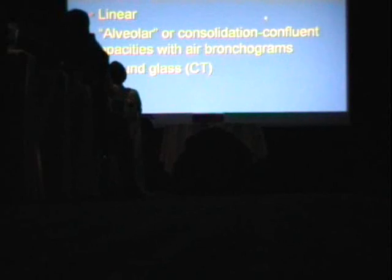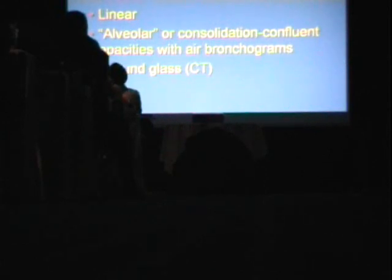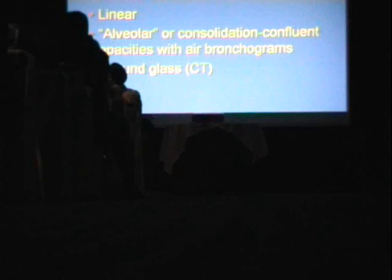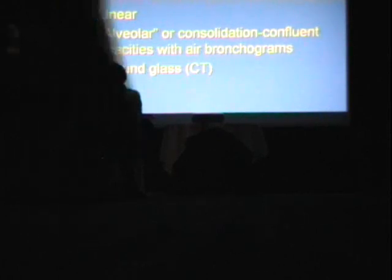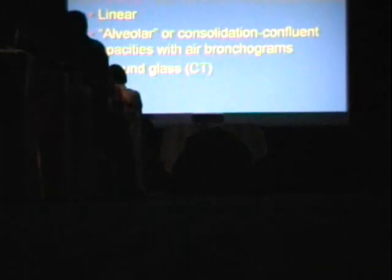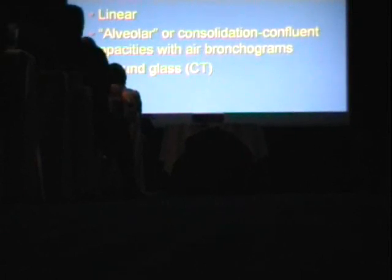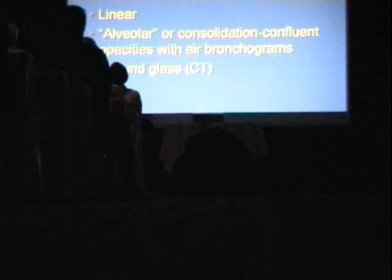The best way to approach both plain film and infiltrative lung disease, now that we're largely digital, and also HRCT, is to have an approach based on patterns, location, and ancillary features. There are really only four patterns to deal with: nodules (small rounded opacities), linear opacities, and sometimes combined into a reticulonodular pattern; alveolar disease with confluent opacities and air bronchograms; and consolidation with air bronchograms, which helps guide the differential diagnosis.